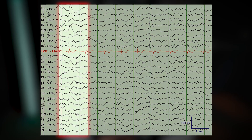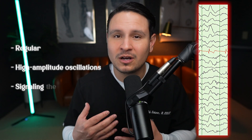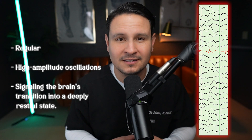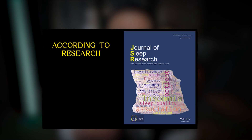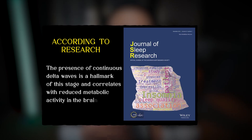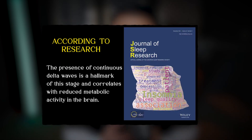On the EEG, N3 sleep is defined by the presence of slow delta waves that dominate the background. These waves are regular, high-amplitude oscillations signaling the brain's transition into a deeply restful state. This stage differs significantly from earlier sleep stages, as the slower frequencies and higher voltages indicate reduced sensory responsiveness and deeper unconsciousness. Research from the Journal of Sleep Research highlights that the presence of continuous delta waves is a hallmark of this stage and correlates with reduced metabolic activity in the brain.